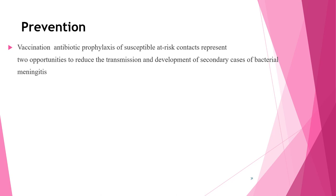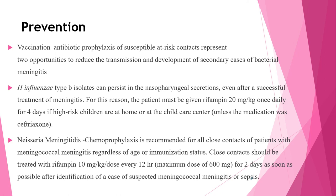Prevention includes vaccination and antibiotic prophylaxis of at-risk contacts. H. influenzae type b isolates can persist in nasopharyngeal secretions even after successful treatment; therefore patients must be given rifampin 20 mg/kg once daily for 4 days unless the treating medication was ceftriaxone. For Neisseria meningitidis, chemoprophylaxis is recommended for all close contacts regardless of age or immunization status. Close contacts should be treated with rifampin 10 mg/kg per dose every 12 hours for 2 days, as soon as possible after identification of a suspected case.